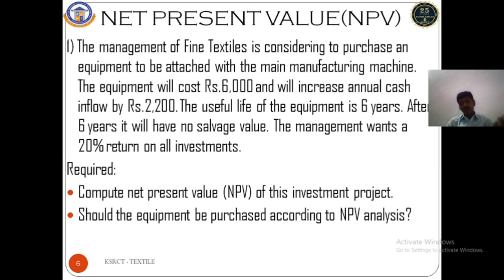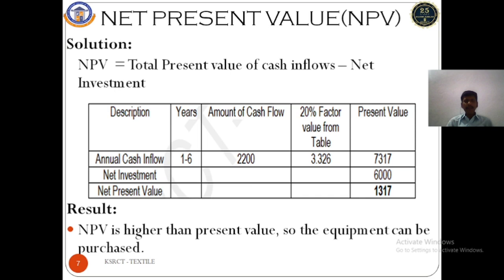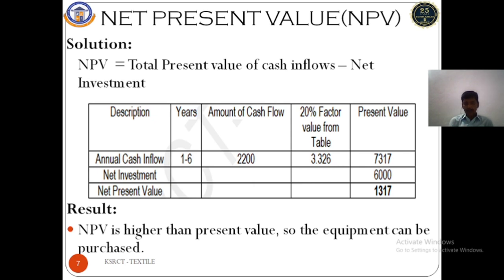We know the formula: NPV = Total Present Value of Cash Inflows minus Net Investment. We form a tabular column with columns for description, amount of cash inflow, factor value at 20%, and present value. The description is annual cash inflow over years 1 to 6, and the amount of cash inflow given is 2,200. We now need to calculate the 20% factor value from the respective table.